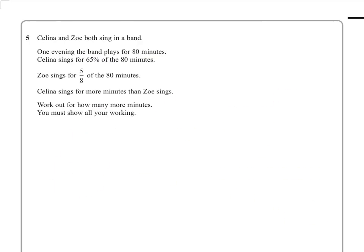So for this question, question five, Selena and Zoe both sing in a band, and you've got to work out the difference in their singing times. And it does say that Selena sings for more minutes than Zoe, which is helpful. So if you make a mistake and it works out that Zoe would sing more, then you'd know you've made a mistake here. So it's giving you some clue at least, and it's a calculator paper as well.